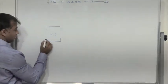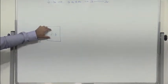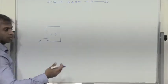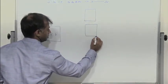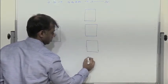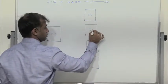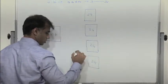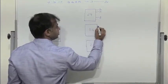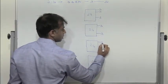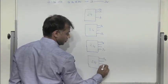We need 16 outputs, so we definitely need 4 two-to-4 decoders. The first decoder gives Y0, Y1, Y2, Y3. The second gives Y4, Y5, Y6, Y7. The third gives Y8, Y9, Y10, Y11. And the fourth gives Y12, Y13, Y14, Y15.